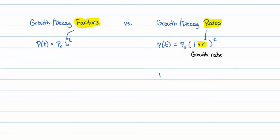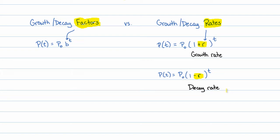Along the same lines, if the base is written as 1 minus r, then r is known as a decay rate, because you're losing a certain percentage. For example, if a population is declining by 7% per year, you have a decay rate of 7% per year.